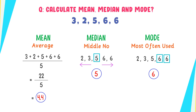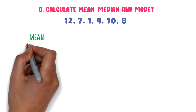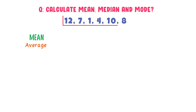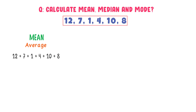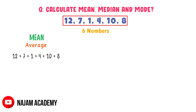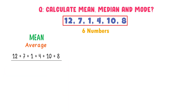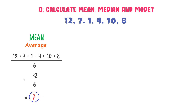Let me give you one another example. Find the mean, median and mode of the following data set. We know that mean and average are the same thing. I will add all these numbers: 12 plus 7 plus 1 plus 4 plus 10 plus 8. There are 6 numbers present in this data set, so I will divide by 6. After adding, I get 42. 42 divided by 6, I get 7. So the mean or average number of this data set is 7.